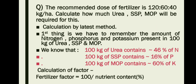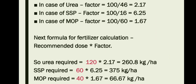In this latest method, we first have to calculate the factor. The fertilizer factor is calculated as 100 divided by the nutrient content. For urea, the factor is 100 divided by the nitrogen content in urea, which is 46%, so 100 divided by 46 equals 2.17.